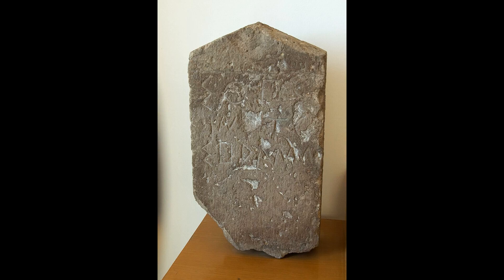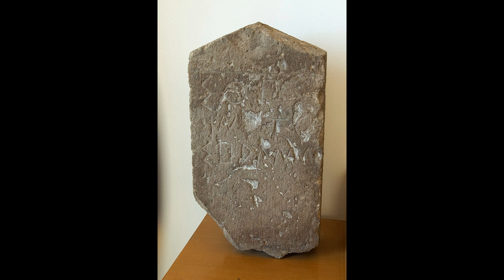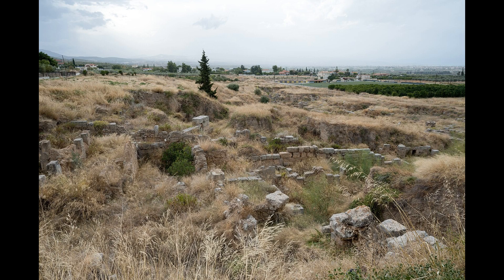This article primarily contains information about the epic and classical periods of the language. From the Hellenistic period, circa 300 BC, Ancient Greek was followed by Koine Greek, which is regarded as a separate historical stage, although its earliest form closely resembles Attic Greek and its latest form approaches Medieval Greek. There were several regional dialects of ancient Greek, of which Attic Greek developed into Koine.